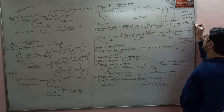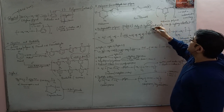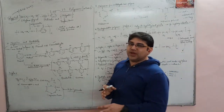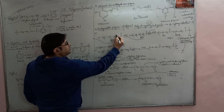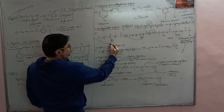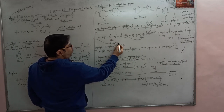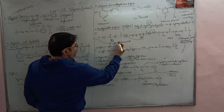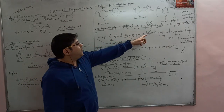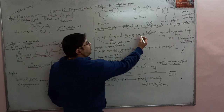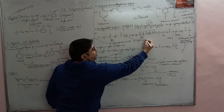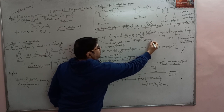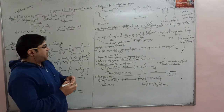Let me draw the structures. Butyrate: four carbon atoms, with OH on the beta (third) carbon — IUPAC name: 3-hydroxybutanoic acid. Valerate: five carbon atoms, OH on the third (beta) carbon — IUPAC name: 3-hydroxypentanoic acid. Now I'll condense both.